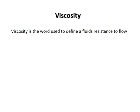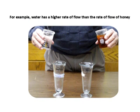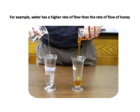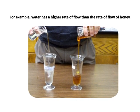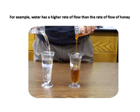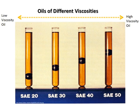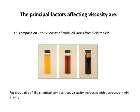Viscosity is a word used to define a fluid's resistance to flow. For example, water has a higher rate of flow than honey. This is a picture of motor oils of different viscosities. The viscosity of crude oil varies from field to field. For crude oils of like chemical composition, viscosity increases with decreases in API gravity.